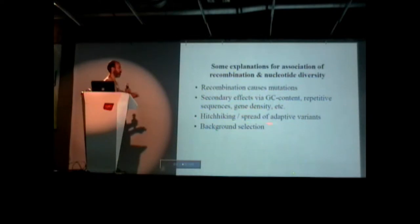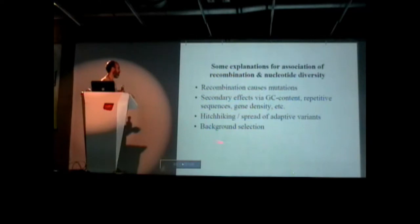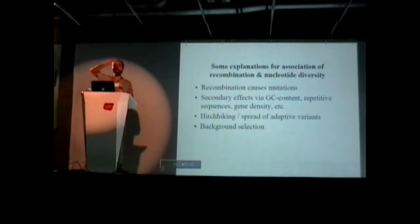You can have hitchhiking, which is where adaptive variants spread, removing variation when you have low recombination. Or you can have background selection, which is basically hitchhiking in reverse — it's essentially the elimination of bad mutations in the same way.